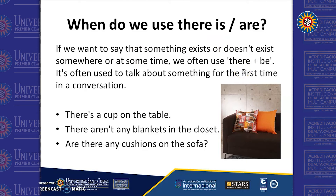In this case we're talking about the present tense. Look at the example: "There is a cup on the table." We can use the contraction with the apostrophe: "there's a cup on the table"—that's the singular form.